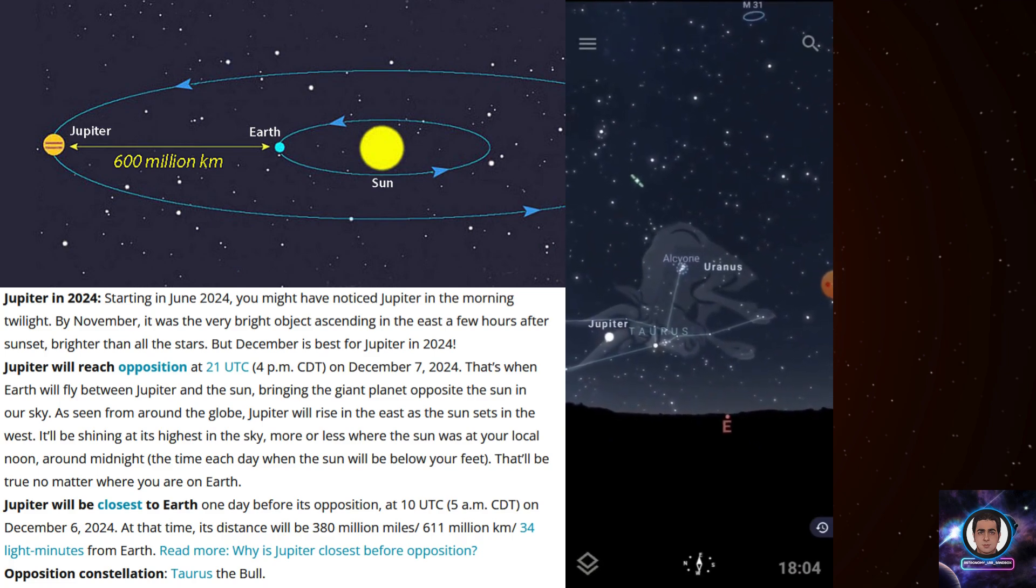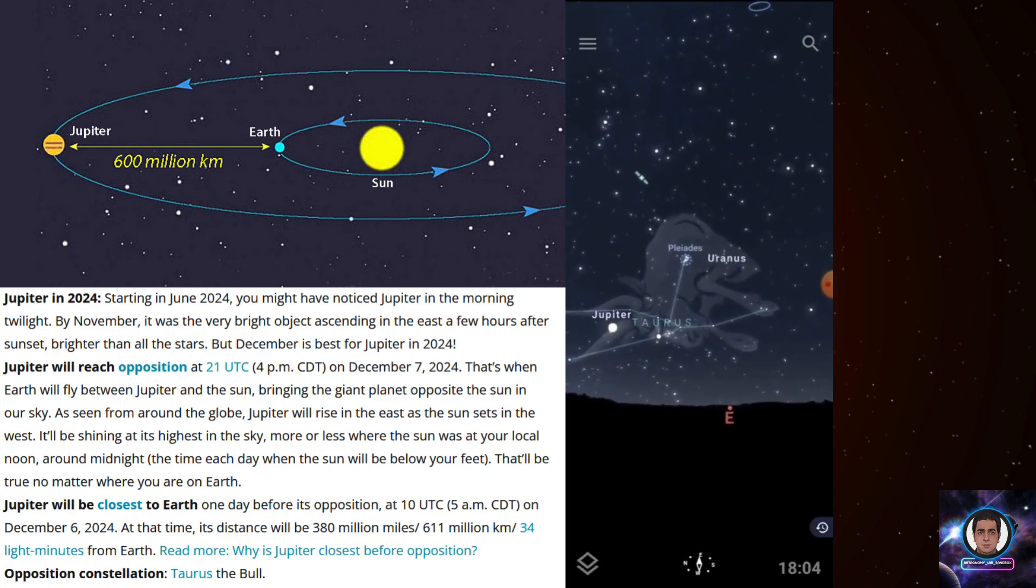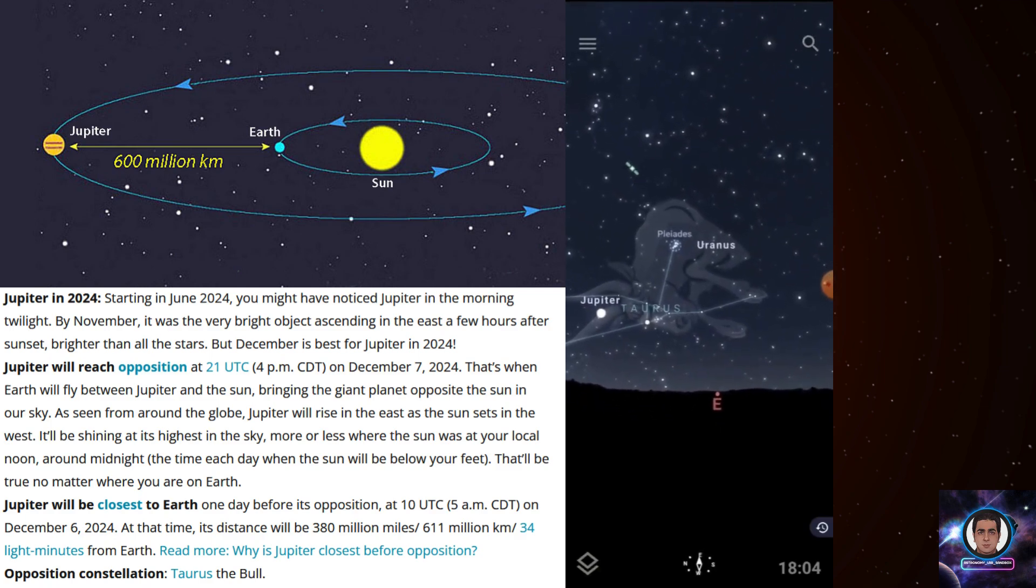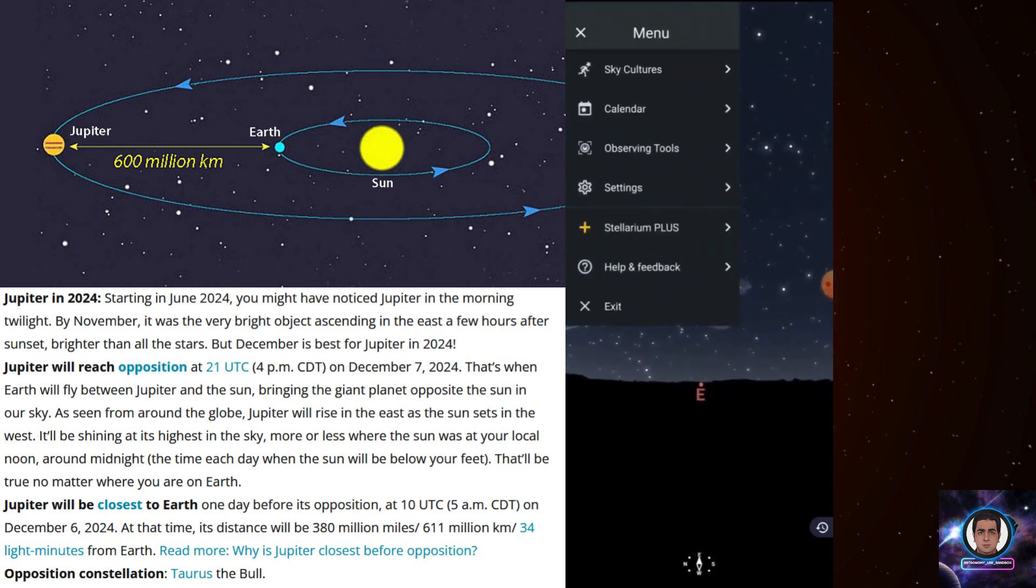As you can see, right now I'm standing toward east and I can see we have Uranus and Jupiter in the east side of the sky, and based on your location you can find out where it is.